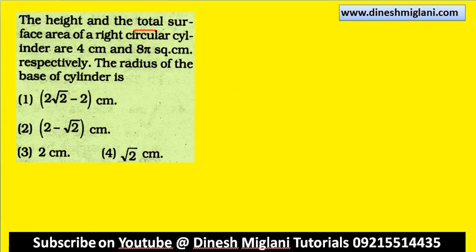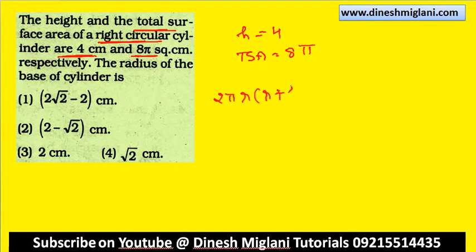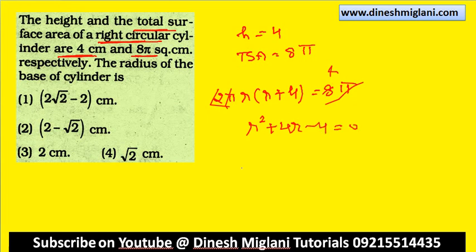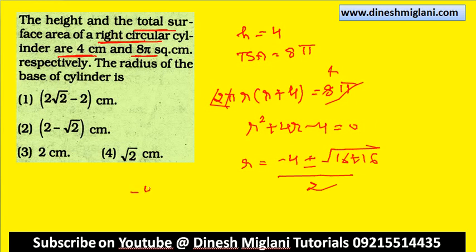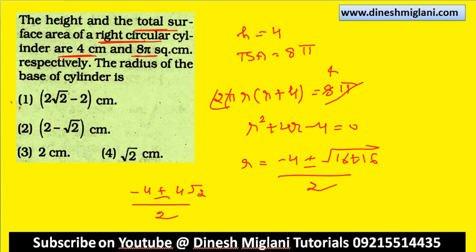Height and total surface area of a right circular cylinder are 4 and 8 pi respectively. Find the radius. Total surface area = 2 pi r (r + h) = 8 pi. Cancelling pi and simplifying: r squared + 4r minus 4 = 0. Using the quadratic formula: r = (minus 4 plus or minus root of 16 + 16) by 2 = (minus 4 plus minus root 32) by 2 = minus 2 plus or minus 2 root 2. Taking positive value: r = 2 root 2 minus 2. First one is my answer.